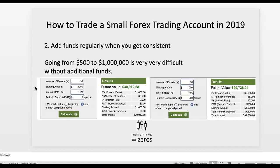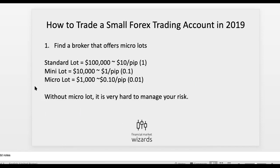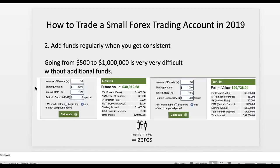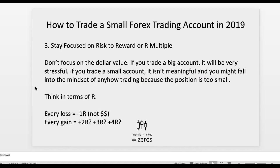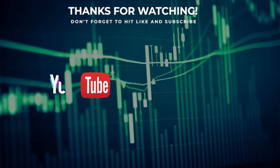We hope you enjoyed this lesson. A brief recap: number one, find a broker that offers micro lots — we'll put a link to our sponsoring brokerage at the bottom, sign up if you have not. Number two, add funds regularly when you are good and consistent. And lastly, stay focused on risk-to-reward and R multiples — don't keep staring at the money fluctuating up and down, it's not helpful. Let us know if you have any questions, hit the subscribe button, and we want to create more content like this to help you become a profitable, independent trader. Comment below or email us — we love to answer them. We'll see you in the next one.